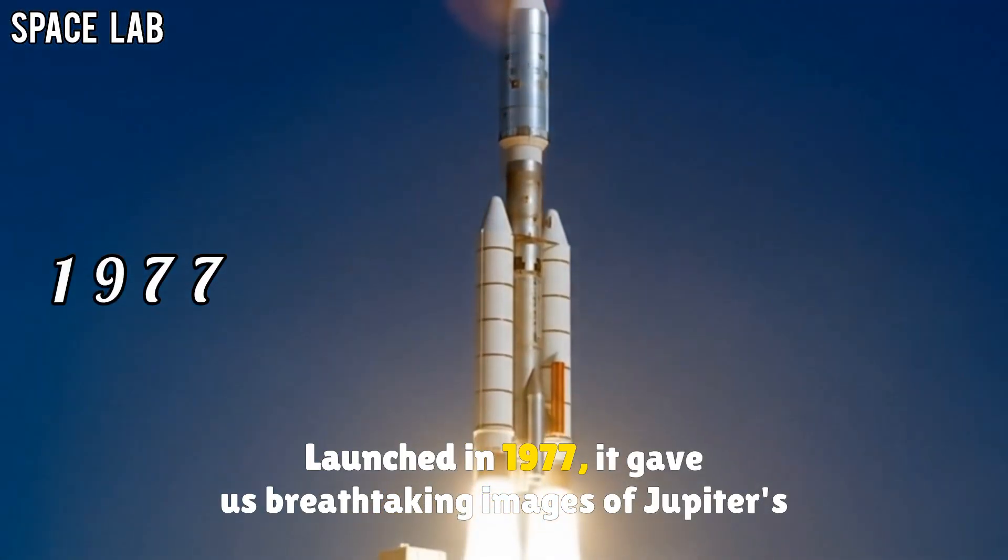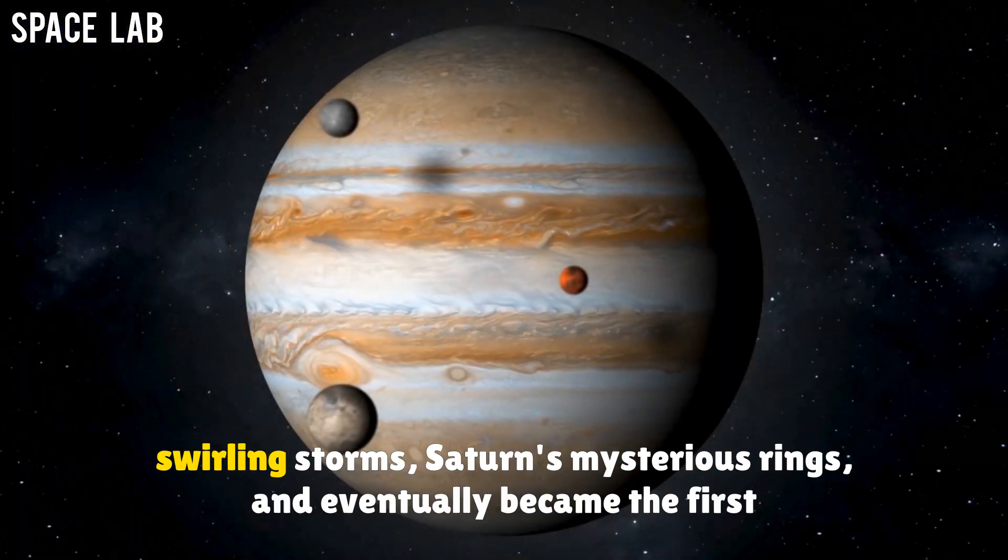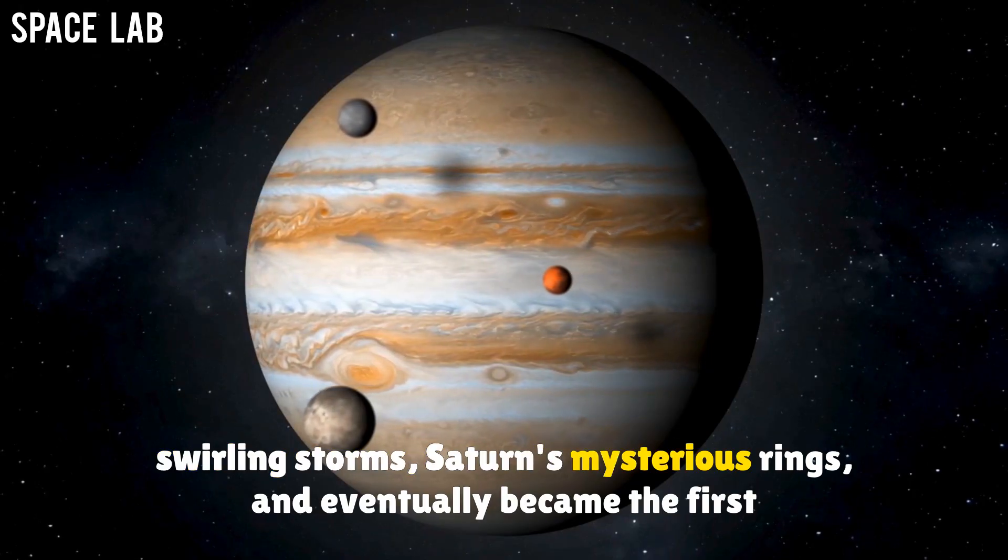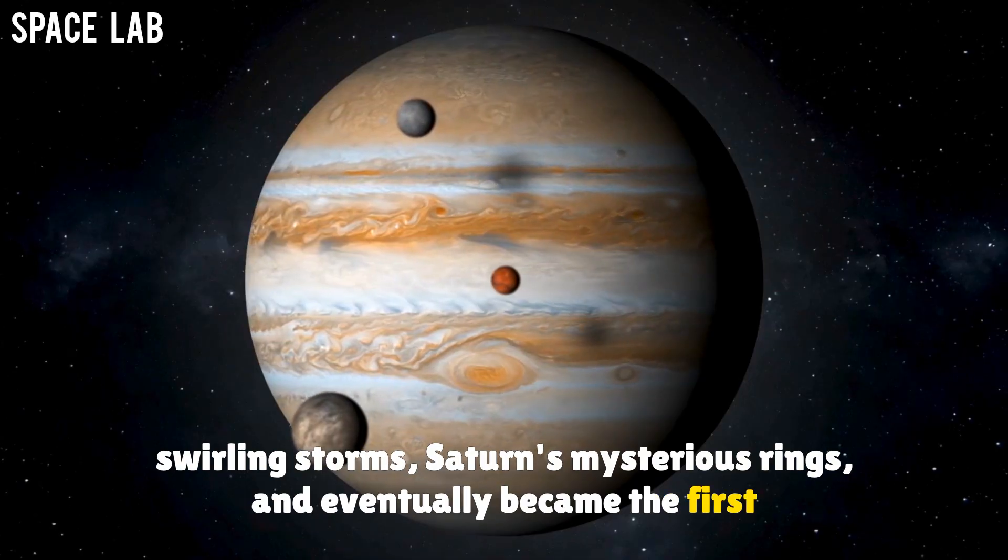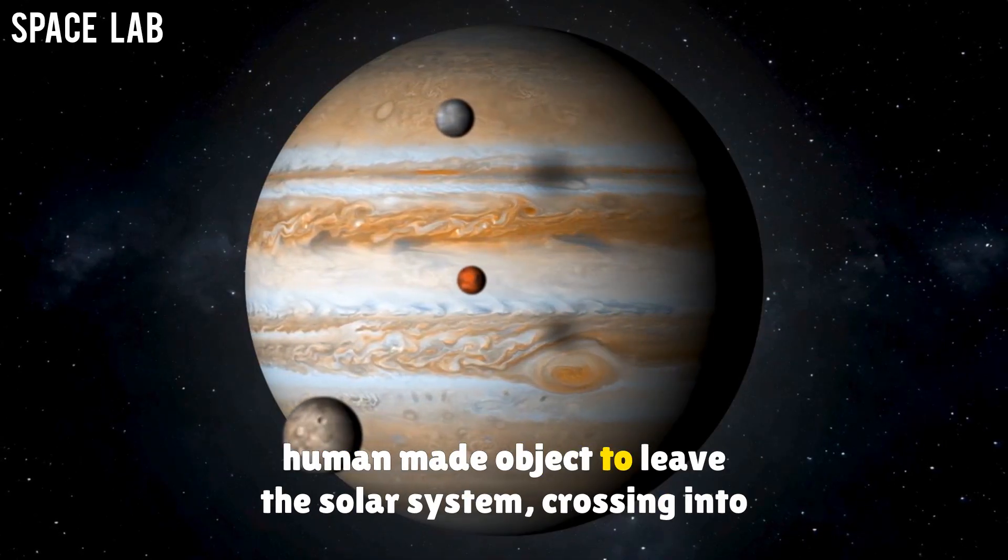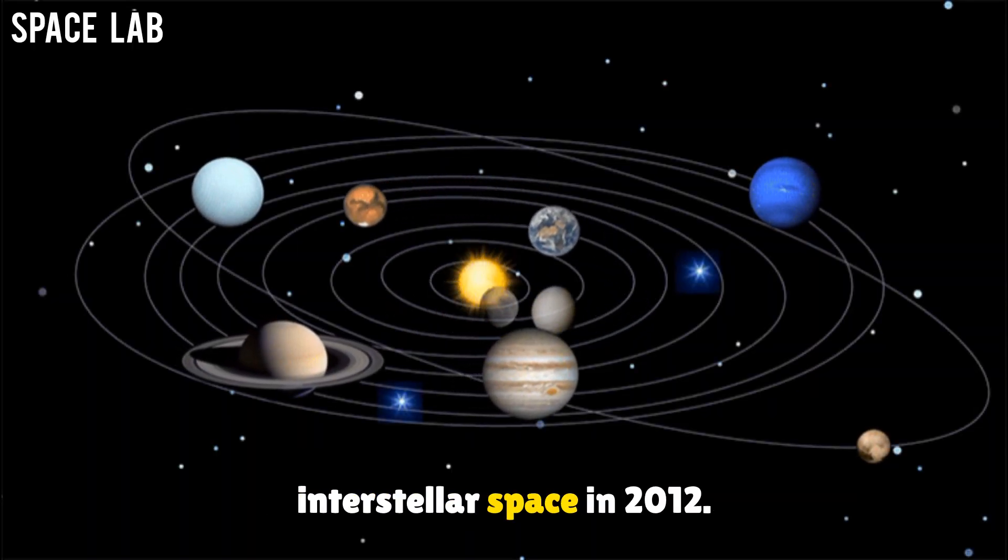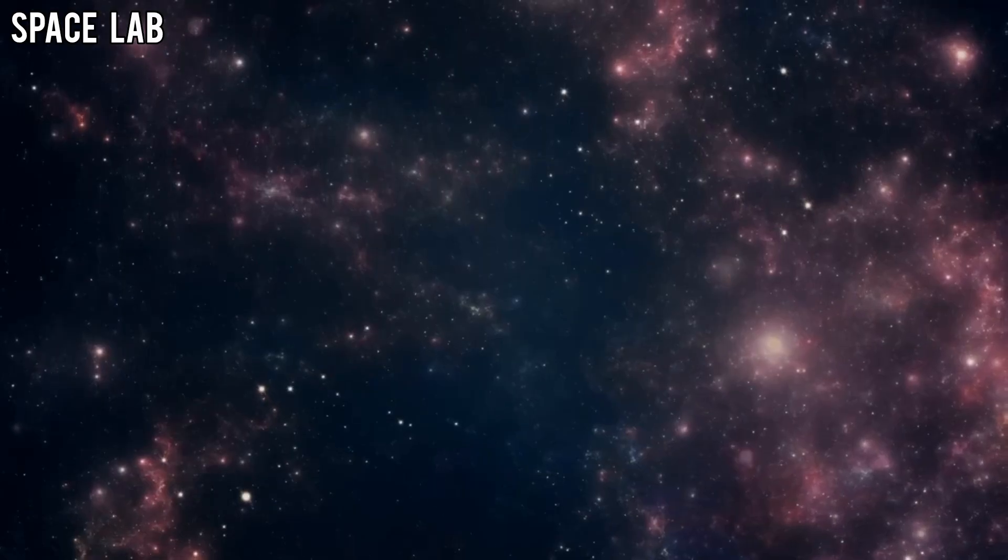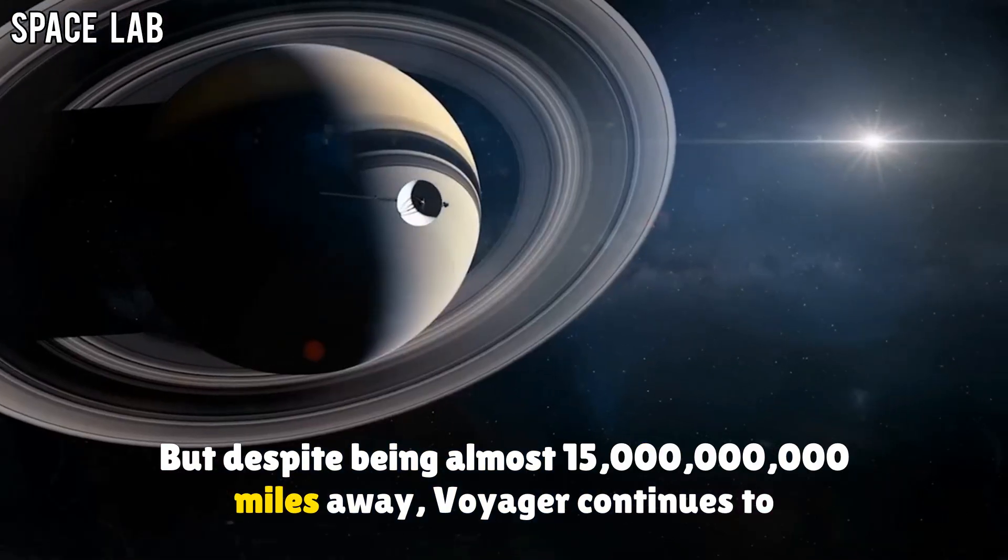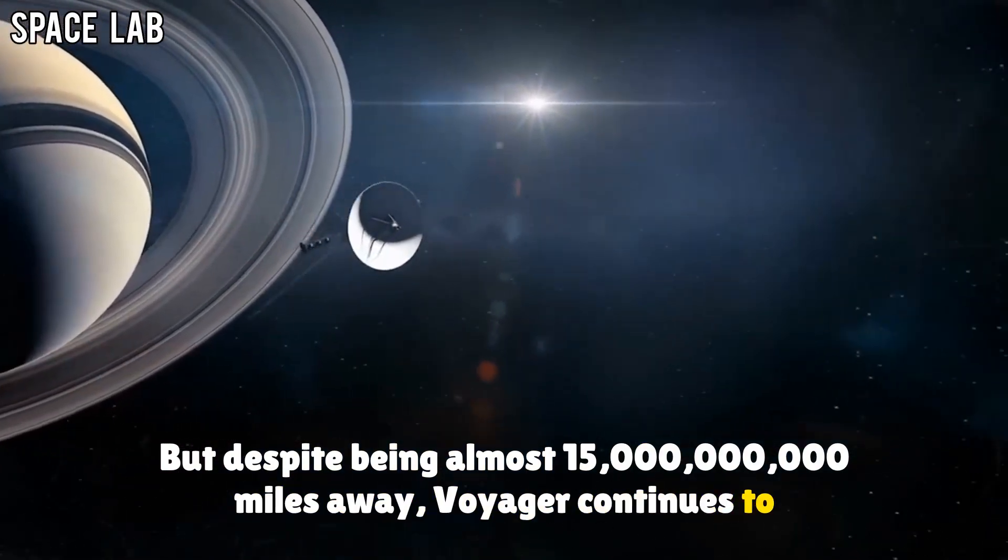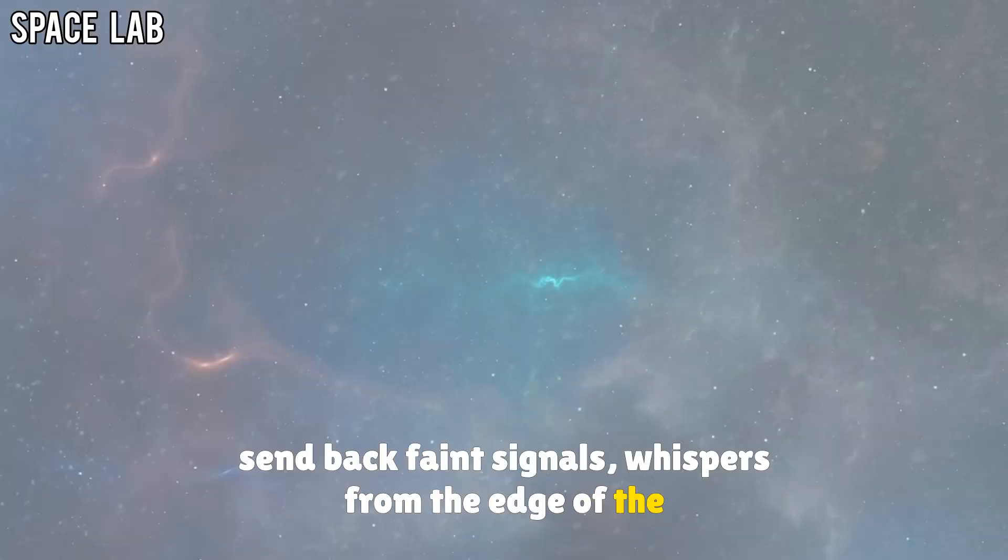Voyager 1 has always been a spacecraft of impossible firsts. Launched in 1977, it gave us breathtaking images of Jupiter's swirling storms, Saturn's mysterious rings, and eventually became the first human-made object to leave the solar system, crossing into interstellar space in 2012. But despite being almost 15 billion miles away, Voyager continues to send back faint signals, whispers from the edge of the unknown.